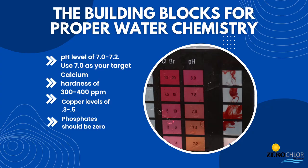The building blocks for proper water chemistry are a pH level of 7 to 7.2—use 7.0 as your target. Sanitizers are much more effective at pH neutral. Calcium hardness of 300 to 400 parts per million increases the conductivity in the water for proper oxygen creation in the chamber. Copper levels of 0.3 to 0.5. Phosphates should be at zero.